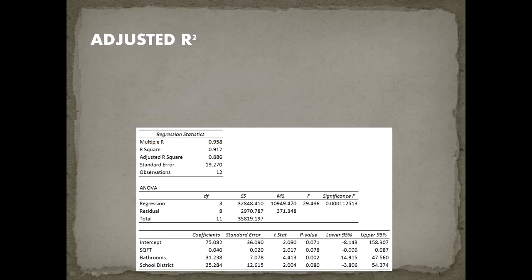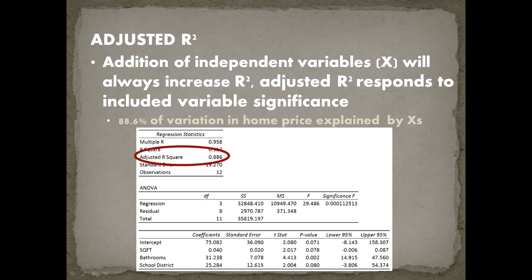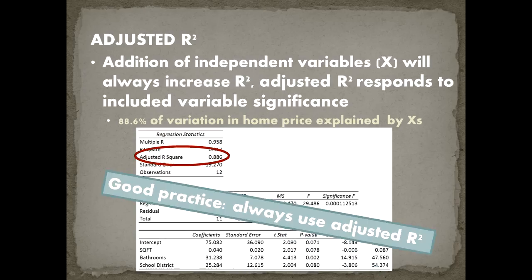After R squared we look at adjusted R squared, which is typically what we report. The reason is that adding independent variables will always increase R squared, whereas adjusted R squared responds to whether the included variable is actually significant. We'd read it as: 88.6% of the variation in home price is explained by our independent variables. Good practice: always use adjusted R squared when reporting the R squared value.